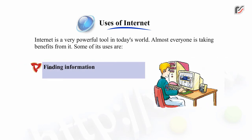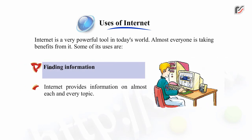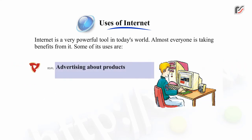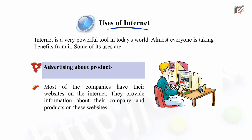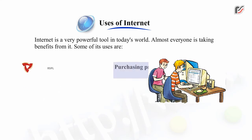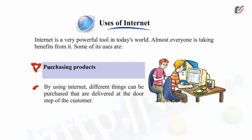Finding information. Internet provides information on almost each and every topic. Advertising about products – most of the companies have their websites on the Internet and provide information about their company and products on these websites. Purchasing products – by using Internet, different things can be purchased that are delivered at the doorstep of the customer.